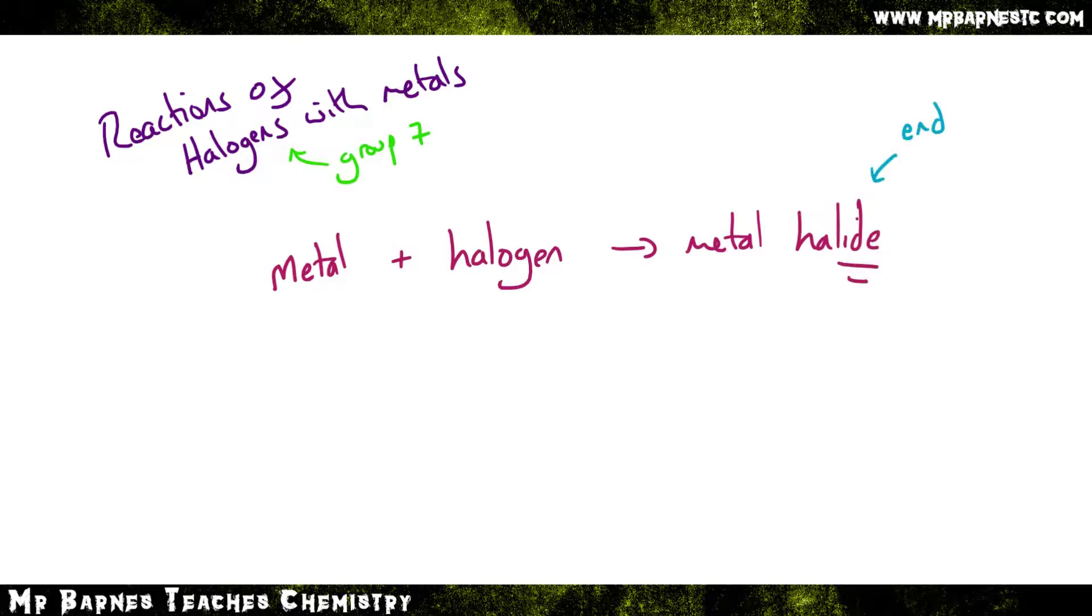All you need to do to name that metal halide is take the name of the metal, take the name of the halogen, and change the ending from I-N-E to I-D-E. So for example, if I react magnesium and bromine together, I will get magnesium bromide.